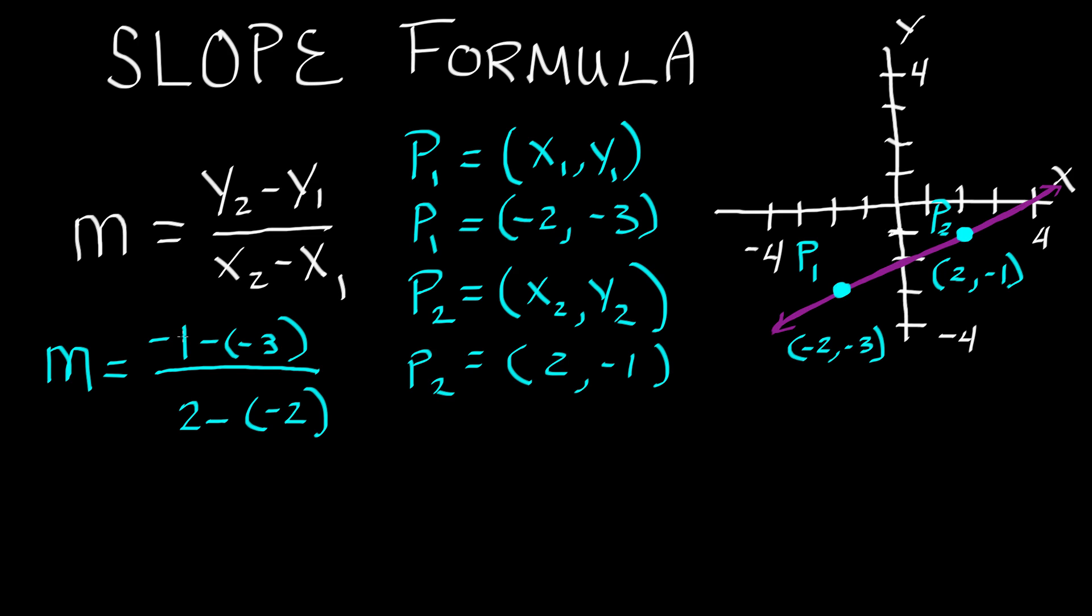So now we basically have negative 1 minus a negative 3. And so minus a negative is the same thing as plus. So we're going to rewrite this as m equals minus 1 plus 3. And then on the bottom we have the same situation. 2 minus a negative 2. Well minus a negative is plus once again. So this ends up becoming 2 plus 2 on the bottom. And then we have negative 1 and we're adding 3 to that. So that becomes a positive 2. And on the bottom we have 2 plus 2 which equals 4.